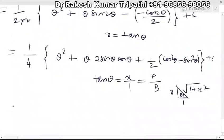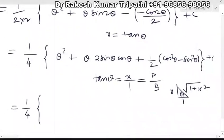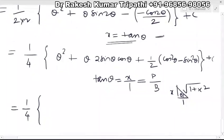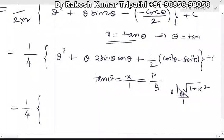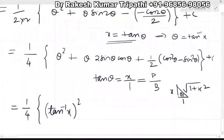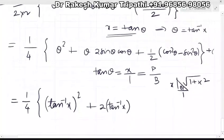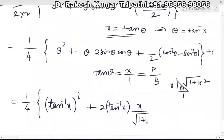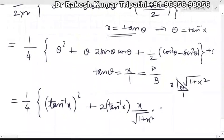With the help of this triangle we shall find all trigonometric ratios. For θ², theta is not a problem — theta is tan⁻¹x, so instead of θ you write tan⁻¹x, giving (tan⁻¹x)². For the term with 2θ we get 2 tan⁻¹x. For sin θ, it is perpendicular upon hypotenuse, which gives x/√(1 + x²), and cos θ is base upon hypotenuse, which is 1/√(1 + x²).